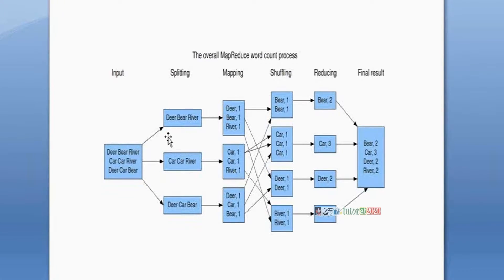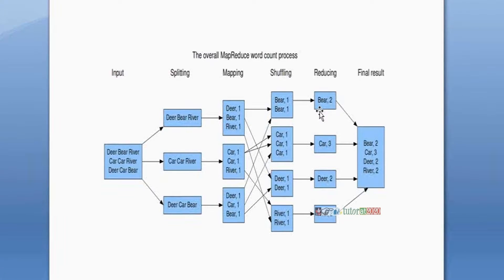The mapper applies mapping logic. Data is read by the splitting concept, then mapping logic is applied. Once mapping is completed, the mapper gives the output. That output goes into the reducer as input. Then the reducer buffers the data, reduces the data, and finally gives the output. When the reducing logic is completed, we get the final output. This is the MapReduce framework.